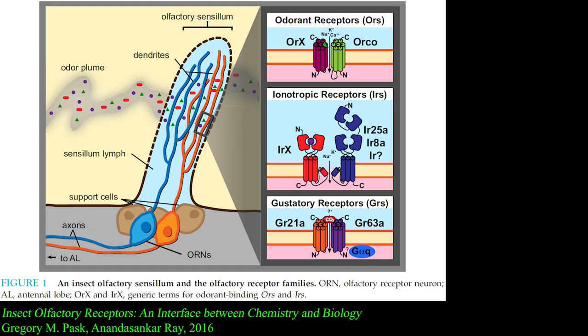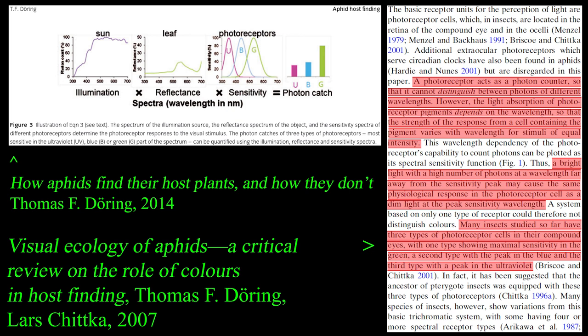The many ommatidia that compose aphid compound eyes resolve shapes and forms poorly, but are sensitive to ultraviolet, blue, and green light spectra, which allow them to locate specific visual cues like stems or leaves. A small group of simple eyes called ocelli detect polarized light from the sky and nearby surfaces where light reflects, signaling verticality and the direction of the sky, which is obviously useful in flight.